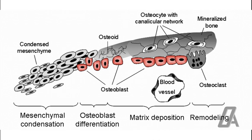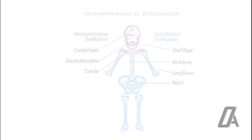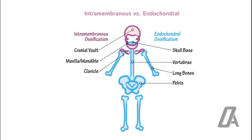Osteoblasts secrete osteoid, the fibrous bone matrix. The original blood vessels are retained in close proximity to the formative bony trabeculae. As bone deposition continues, some osteoblasts get enclosed by their own deposits and become osteocytes. Intramembranous ossification is the major mode of growth in the skull and is seen in areas of tension, with growth taking place outward or externally.